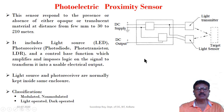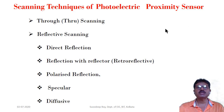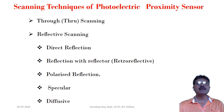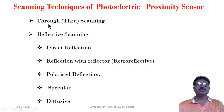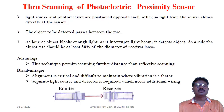A photoelectric proximity sensor has different installation types — these are the scanning techniques, which mainly depend on installation: how the sensors and receivers are installed in a plant. There are two main types: through scanning and reflective scanning. Reflective scanning is further divided into: direct reflection, reflection with reflector (also called retroreflective), polarized reflection, specular, and diffusive.